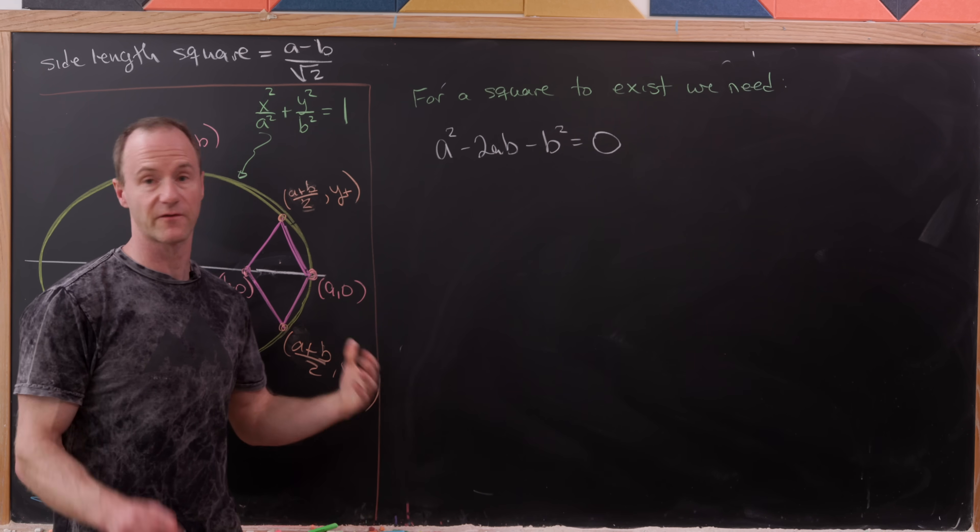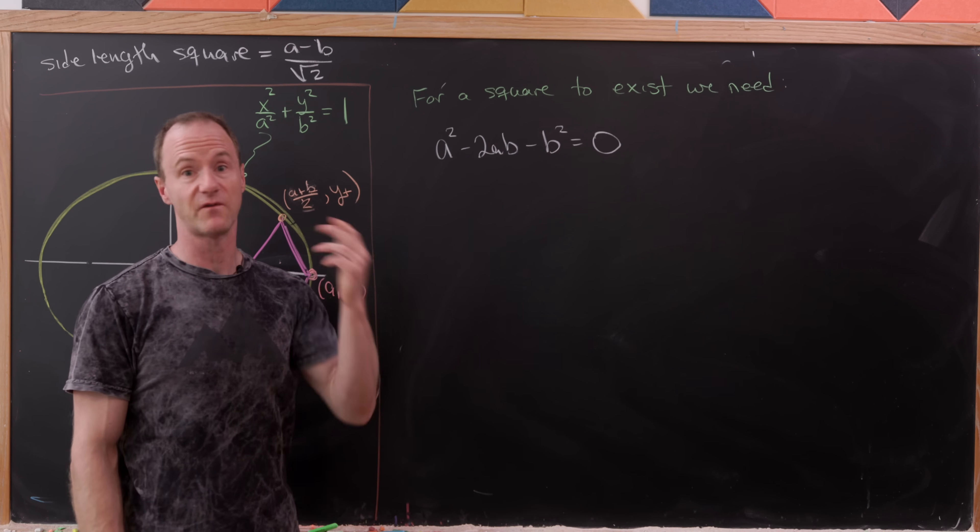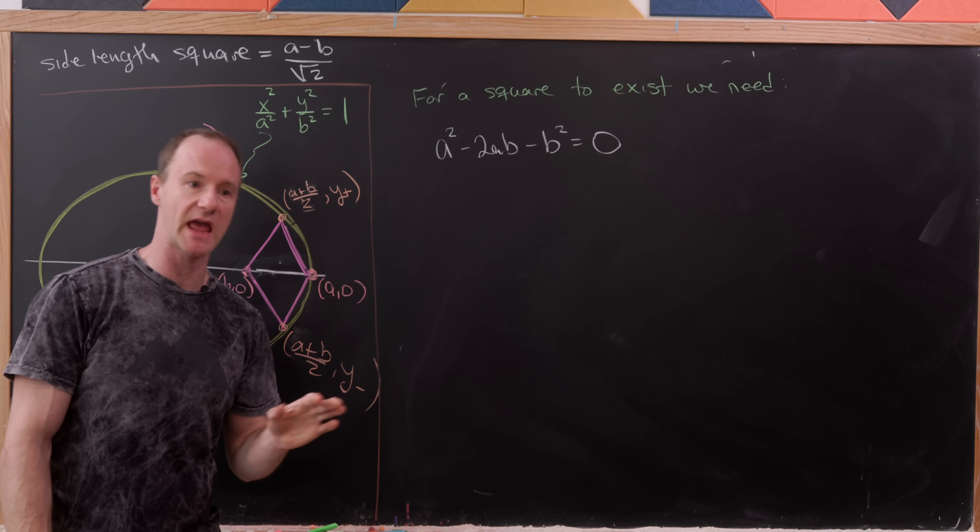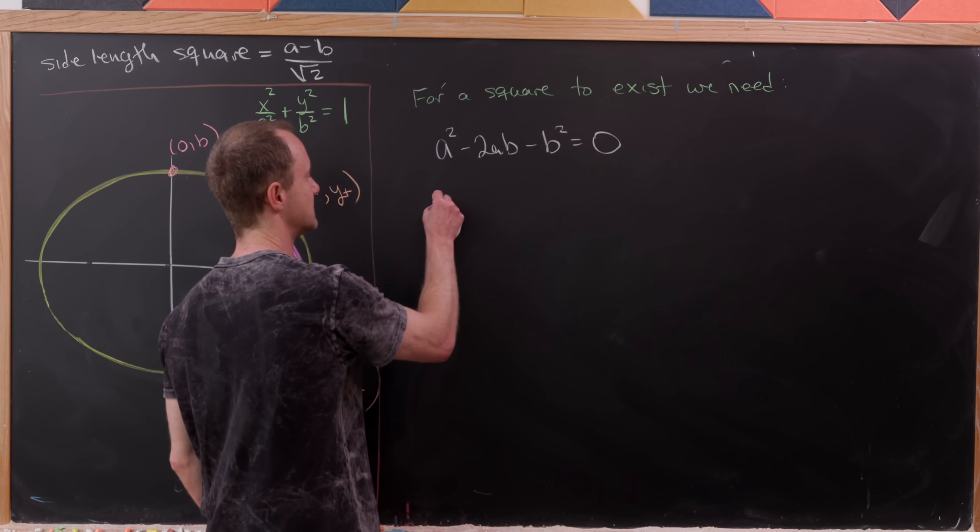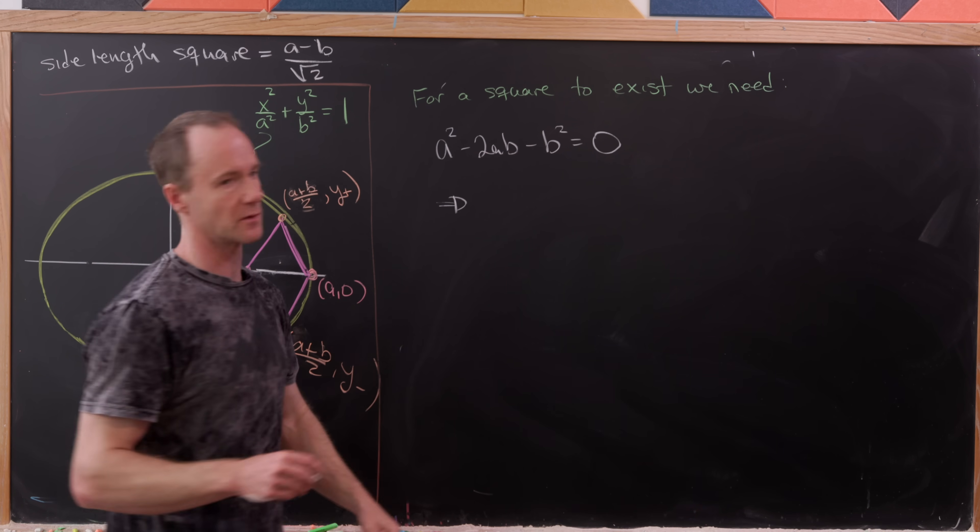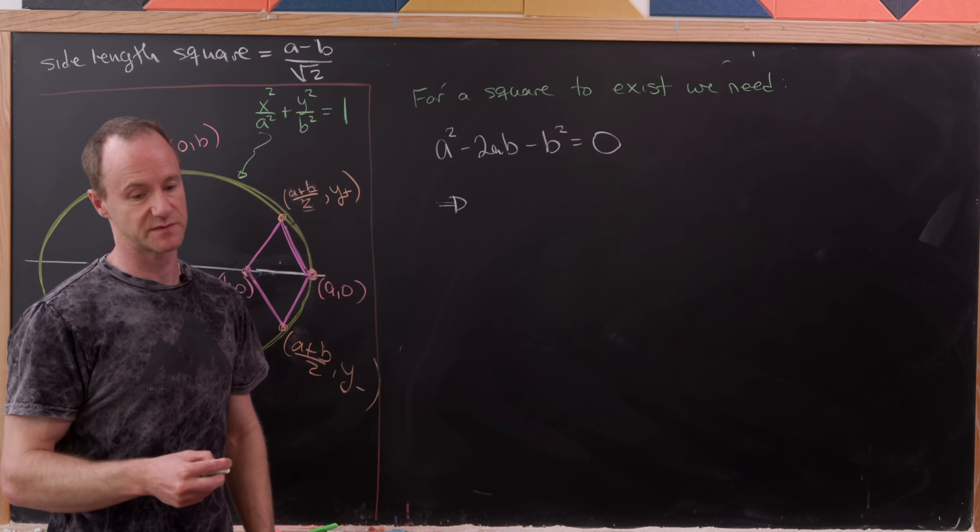We just determined that for such a square to exist, we needed the following relationship between a and b, those numbers associated to the minor and major axes. But notice that we can solve this for b in terms of a or a in terms of b.